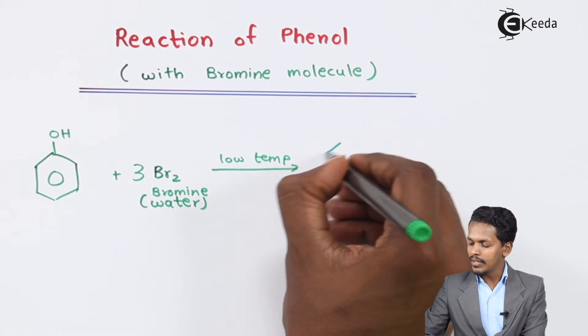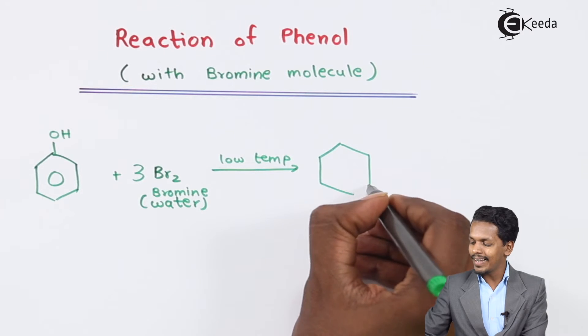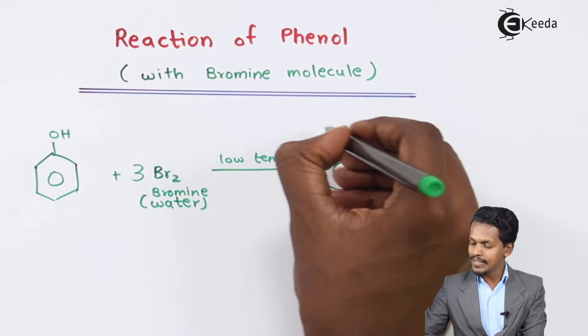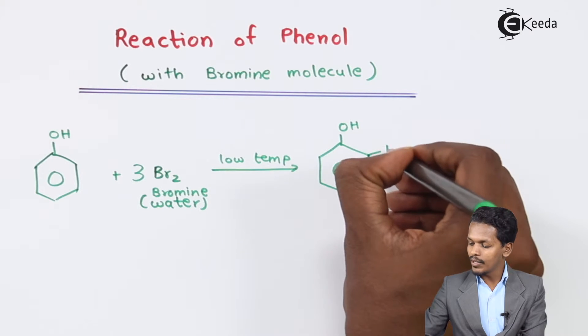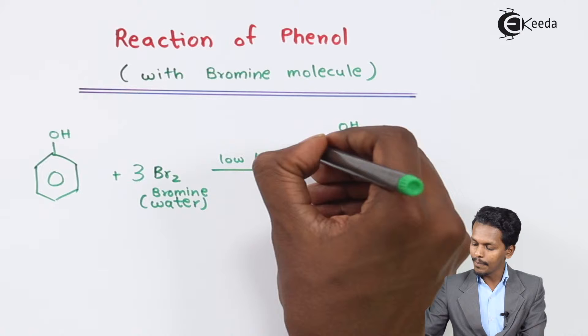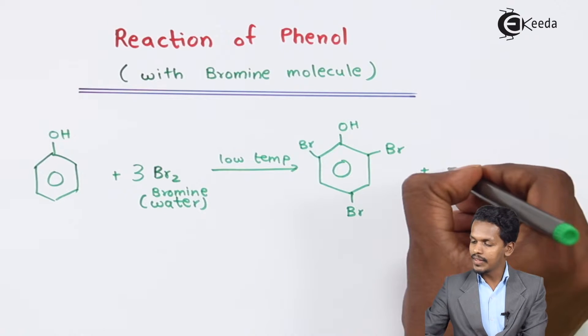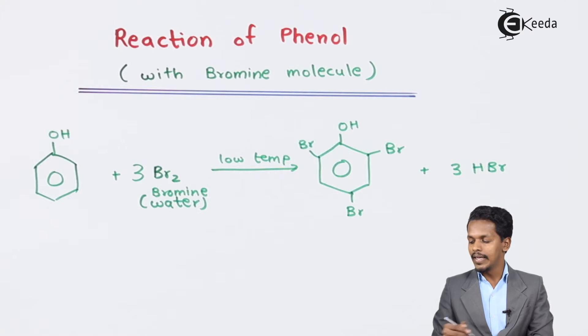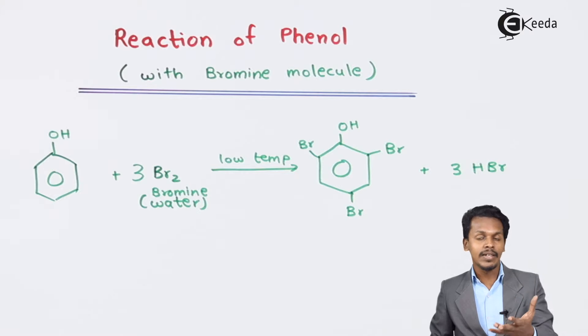So at low temperature we could get a product with a bromine atom here, bromine atom here, and bromine atom here, allowing that three molecules of HBr would be removed as a byproduct. So this is the product that we have got over here and this is how the reaction occurred when we are using water as the solvent.